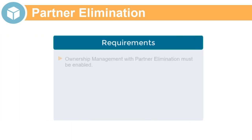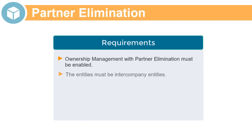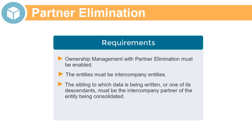Partner elimination rules require that the Ownership Management with Partner Elimination option is enabled for your business process. The entities in the rule scope must be intercompany entities. The sibling entity being written to, or one of the sibling's descendants, must be the intercompany partner of the entity being consolidated. The accounts included in partner elimination rules do not need to be intercompany accounts, and a plug account is not required.